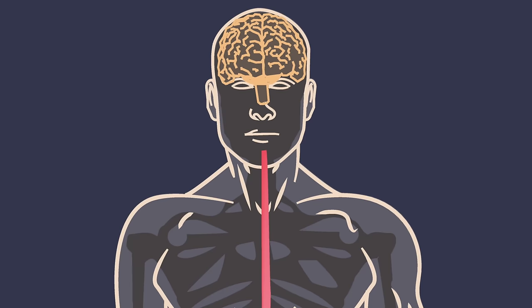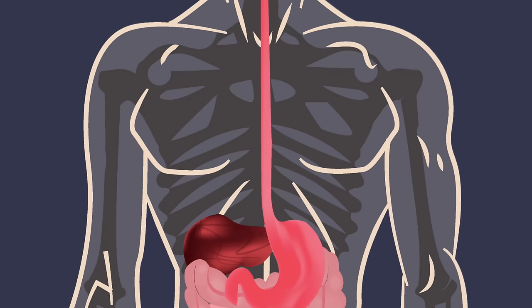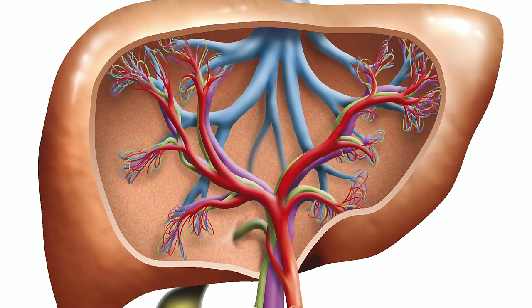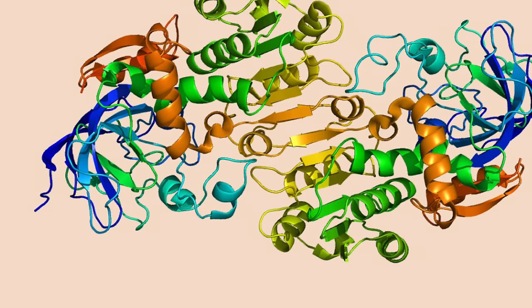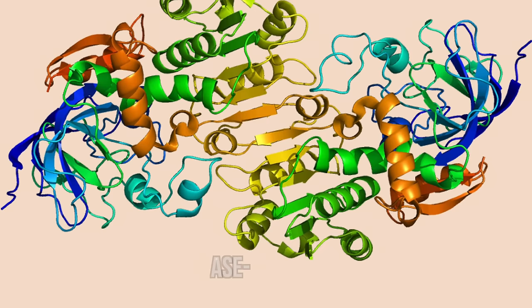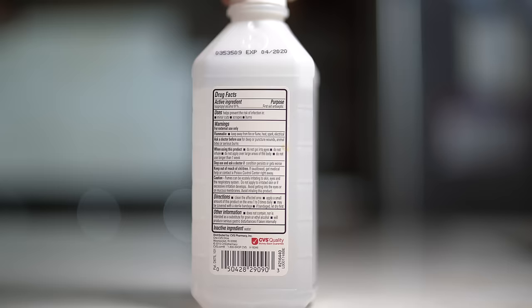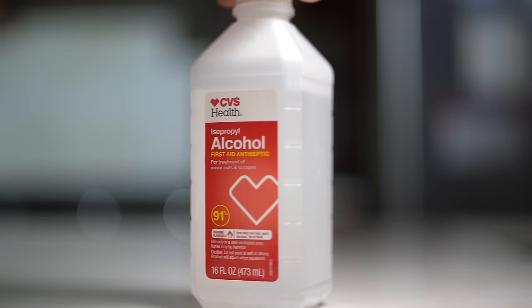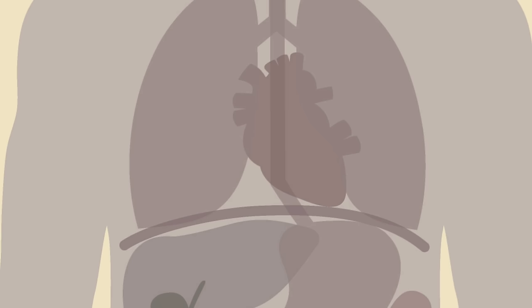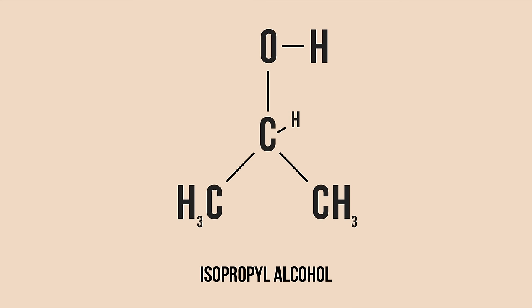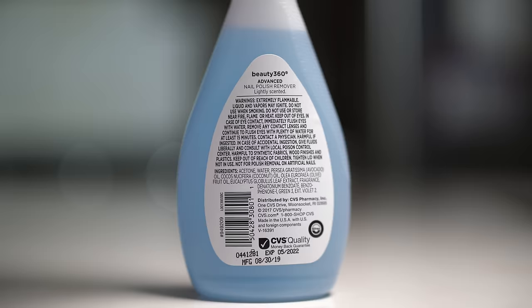While 70% isopropanol disinfects viruses on surfaces, it's not going to disinfect viruses inside the body. Anything that you swallow goes into your stomach and then absorbs into your liver. The liver breaks things down into forms the body can handle — this is called metabolism. Humans evolved a very specific way of metabolizing alcohols. In the liver there's something called alcohol dehydrogenase — 'dehydro' meaning the removal of hydrogen, and 'ase' describing an enzyme, which is a protein that does chemical reactions, like lactase, which breaks down milk sugar. When alcohol dehydrogenase processes isopropanol, it becomes acetone, which is the chemical name for nail polish remover.